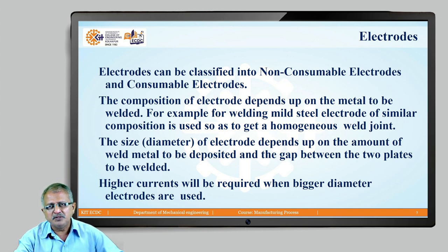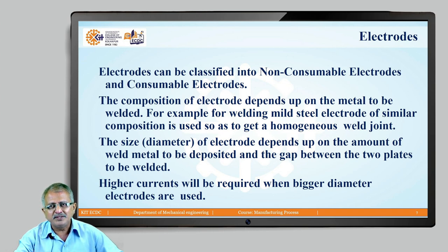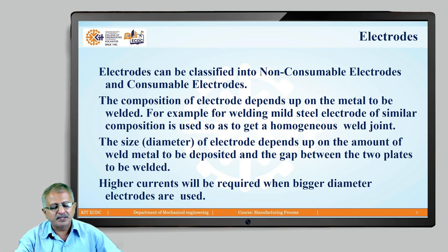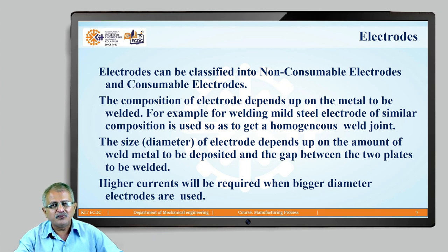Another very important component of electric arc welding is the electrodes used in this process. There are two categories: non-consumable electrodes and consumable electrodes. The composition of the electrode depends upon the base metal being welded, because the welded joint should be as strong as the base metal. Therefore, the composition of the electrode core wire should be the same as the base metal. The size of the electrode depends upon the amount of weld metal to be deposited and the gap between the two plates to be welded.